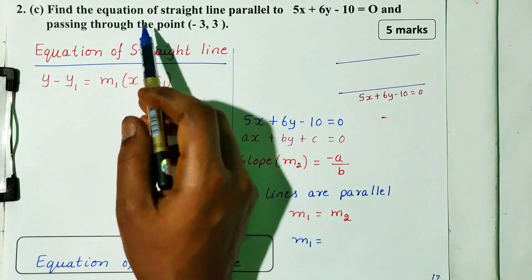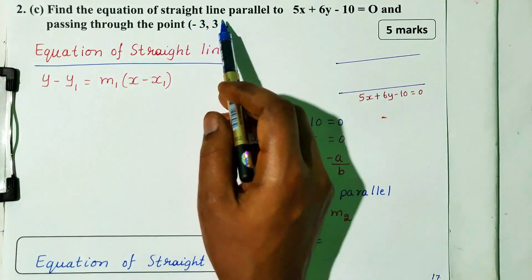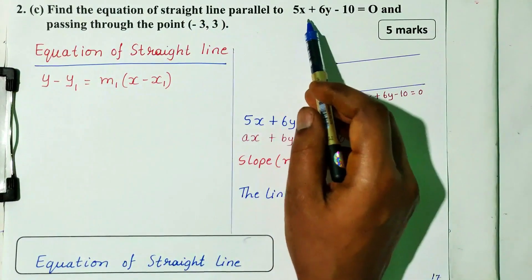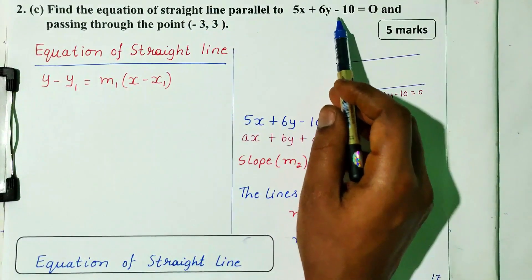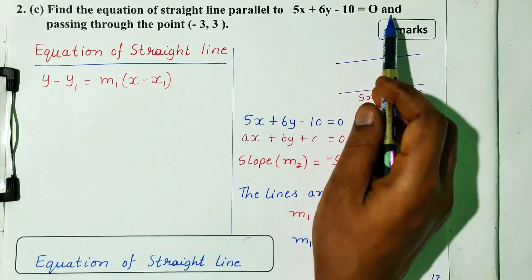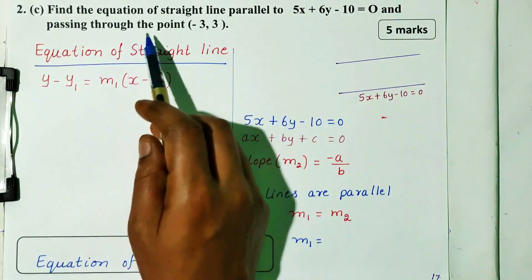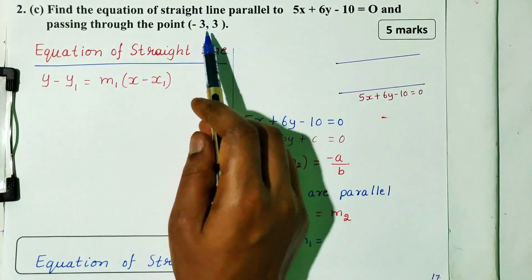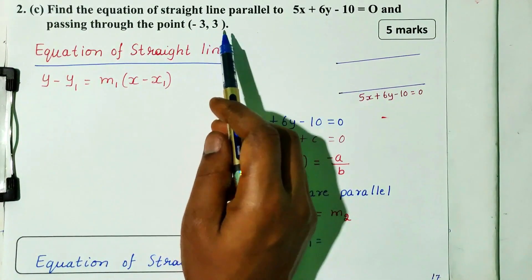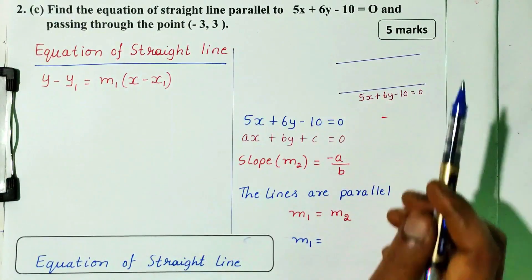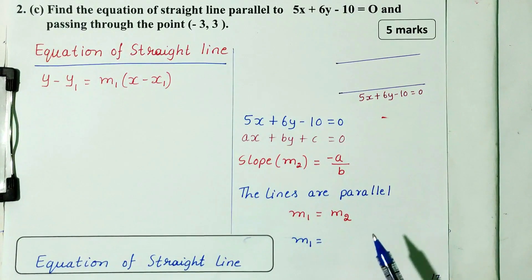Question number 2c: Find the equation of straight line parallel to 5x plus 6y minus 10 is equal to 0 and passing through the point minus 3 comma 3. This is 5 marks.